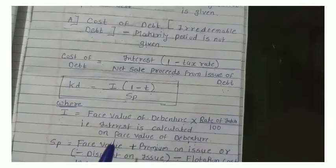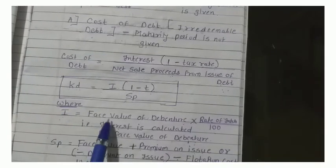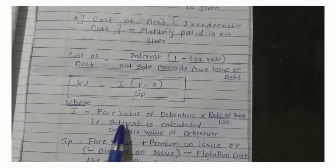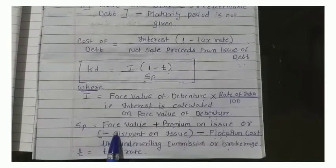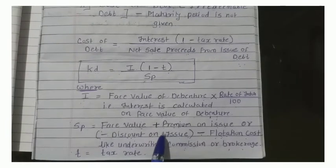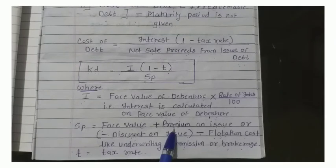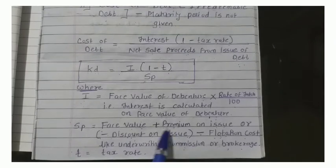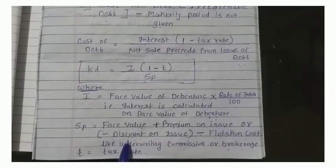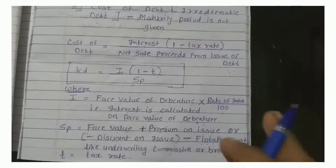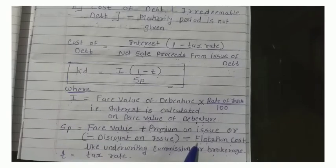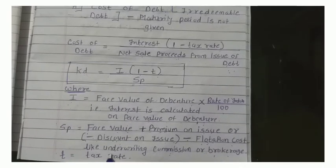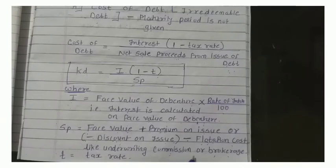You have to remember every formula in your notebook. Interest is always calculated on face value. If the issue is at premium, then the premium is added to face value. If the issue is at discount, then the discount is deducted from face value. Whatever flotation cost there is — such as underwriting, commission, brokerage and so on — calculate the percentage and subtract it.